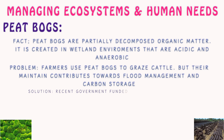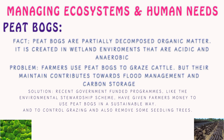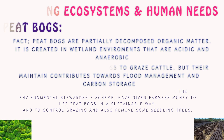Recent government-funded programs, like the Environmental Stewardship Scheme, have given farmers money to use peat bogs in a sustainable way. Farmers have been instructed to control grazing and to remove some seedling trees, which use large amounts of water due to transpiration.